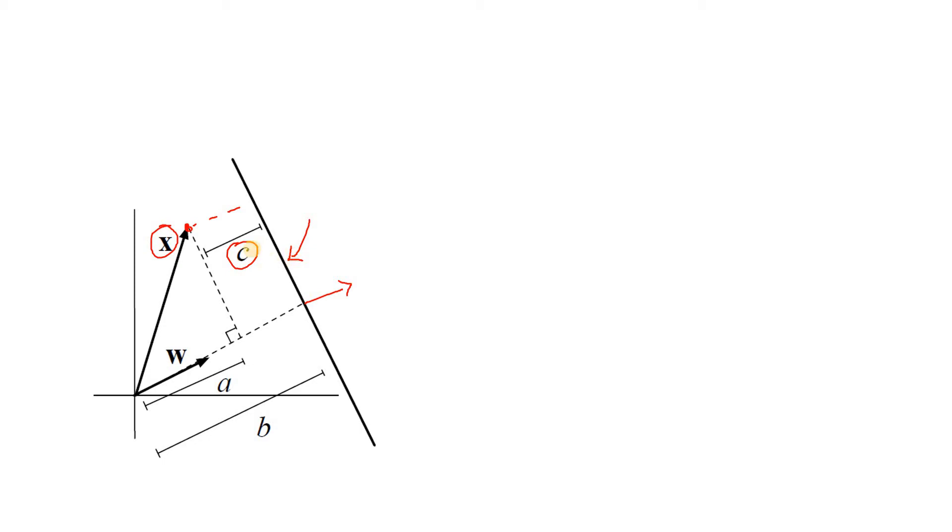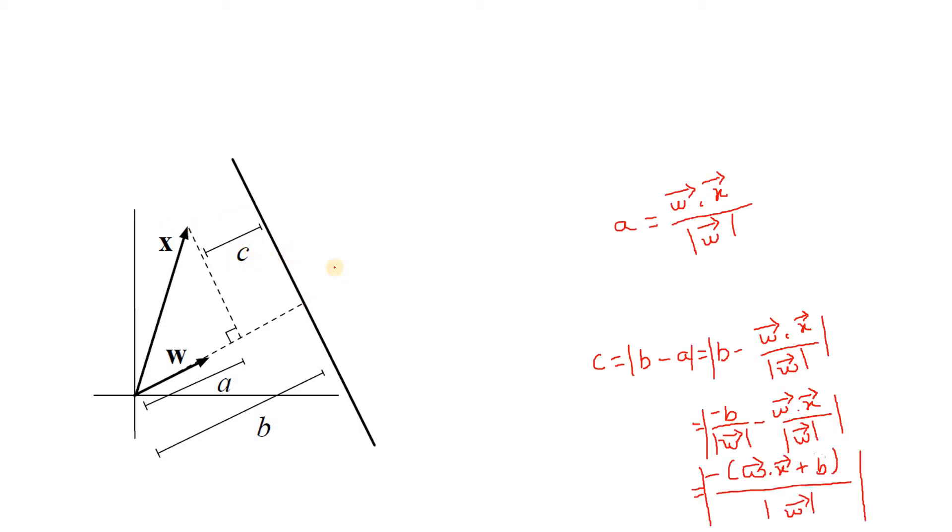What is the formula we derived for c? The formula of c is mod of minus omega dot x plus b by mod of omega.